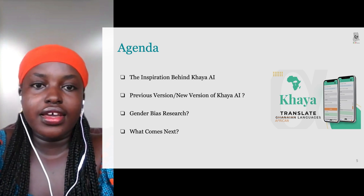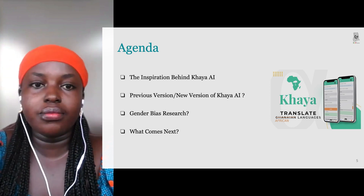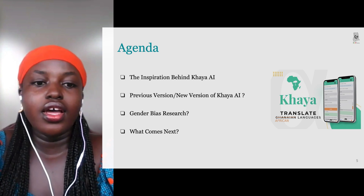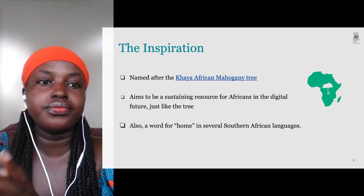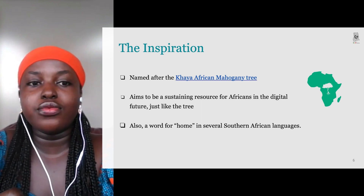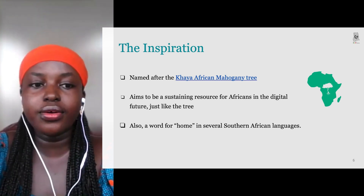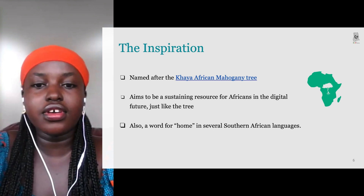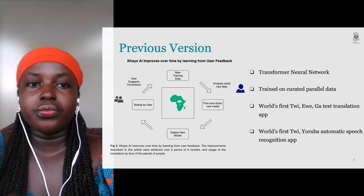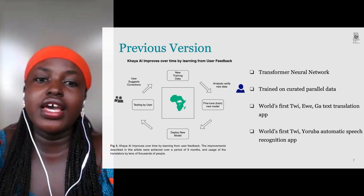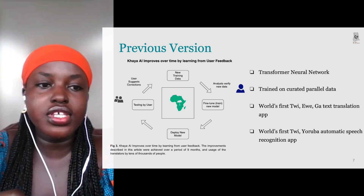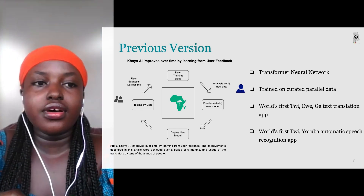I'll be talking about the inspiration behind the Kaya AI, the previous version, the new version, and the gender bias research I've started. The Kaya is named after the African mahogany tree, which aims to sustain resources for Africans in the digital future, and is also a word for home in several southern African languages. With our previous version, we had training data verified by analysts, then fine-tuned our model and trained on that data before deploying it.